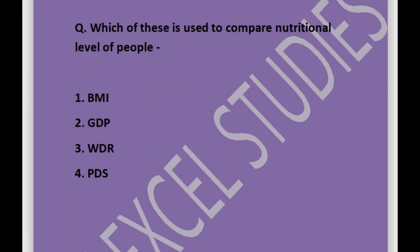Next question: which of these is used to compare the nutritional level of people? Options are BMI, GDP, WDR, or PDS. Answer is BMI, which stands for body mass index.